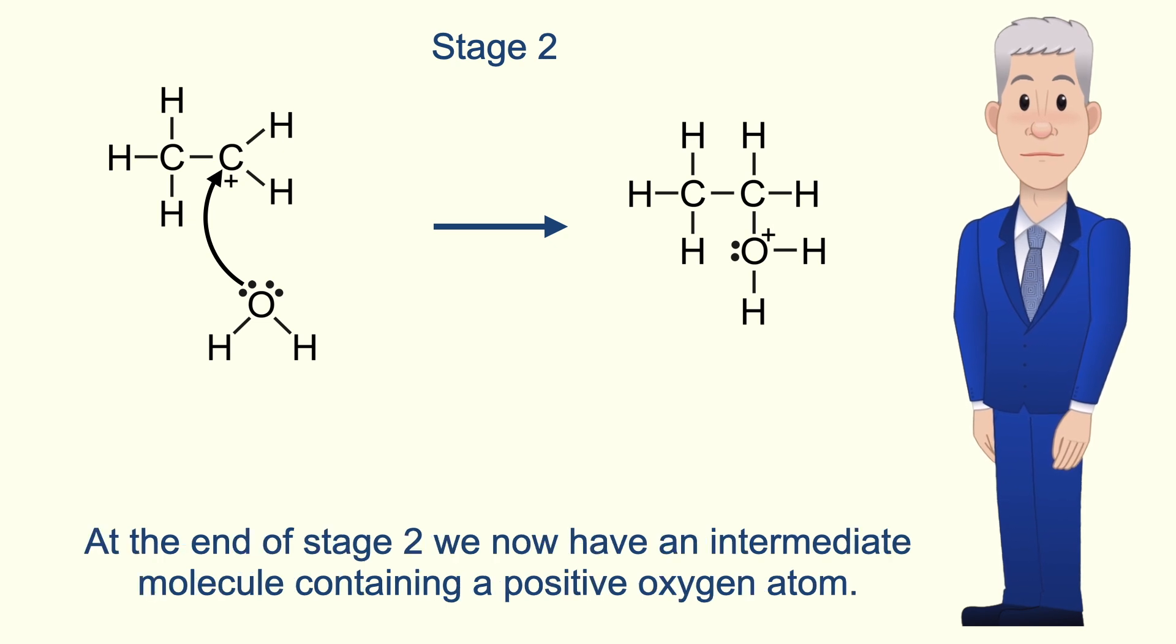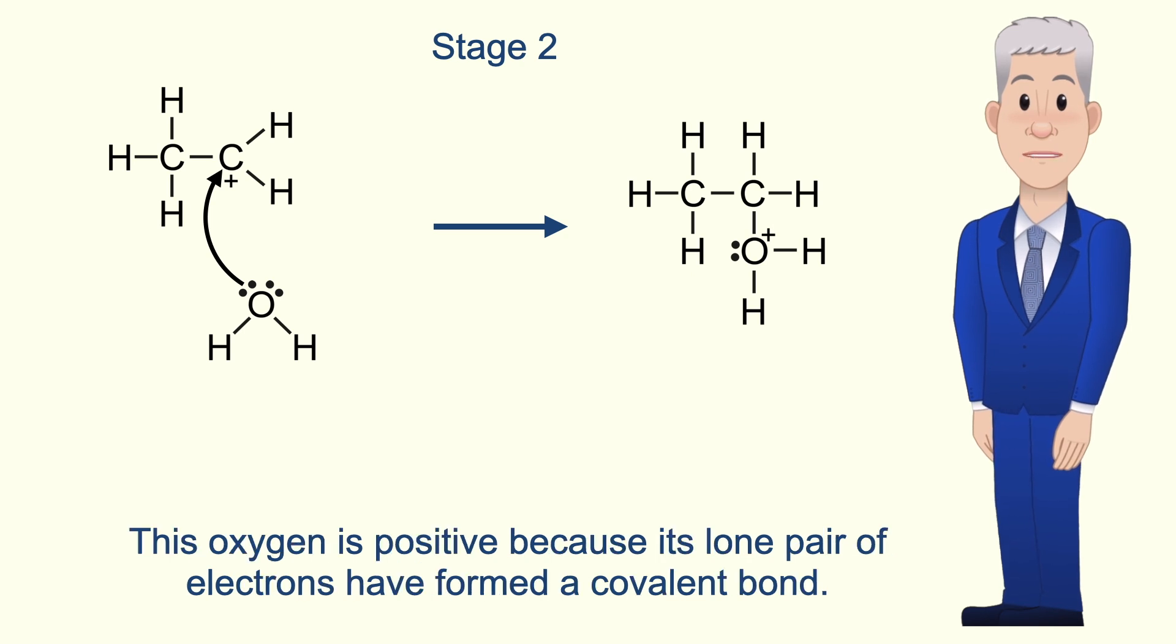At the end of stage two we now have an intermediate molecule containing a positive oxygen atom. This oxygen is positive because its lone pair of electrons have formed a covalent bond.